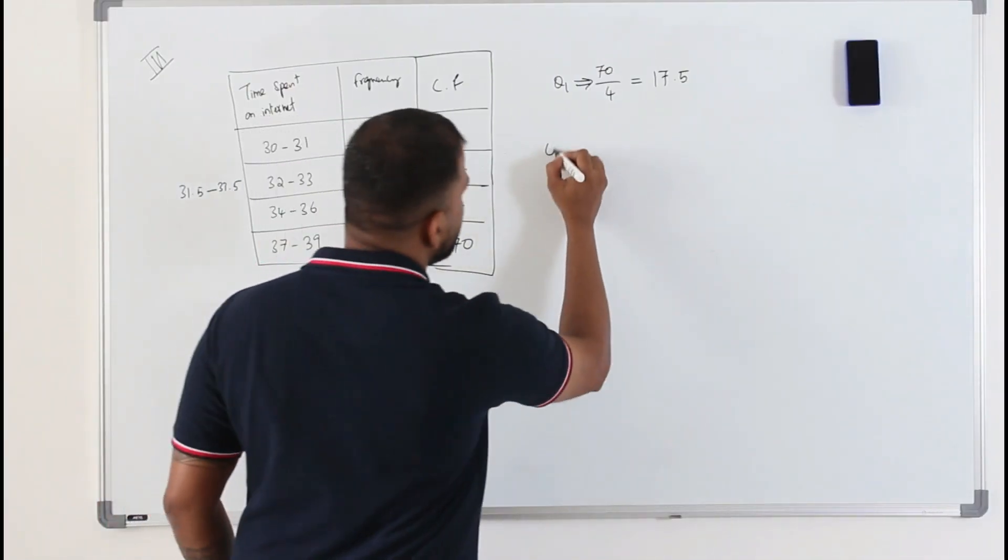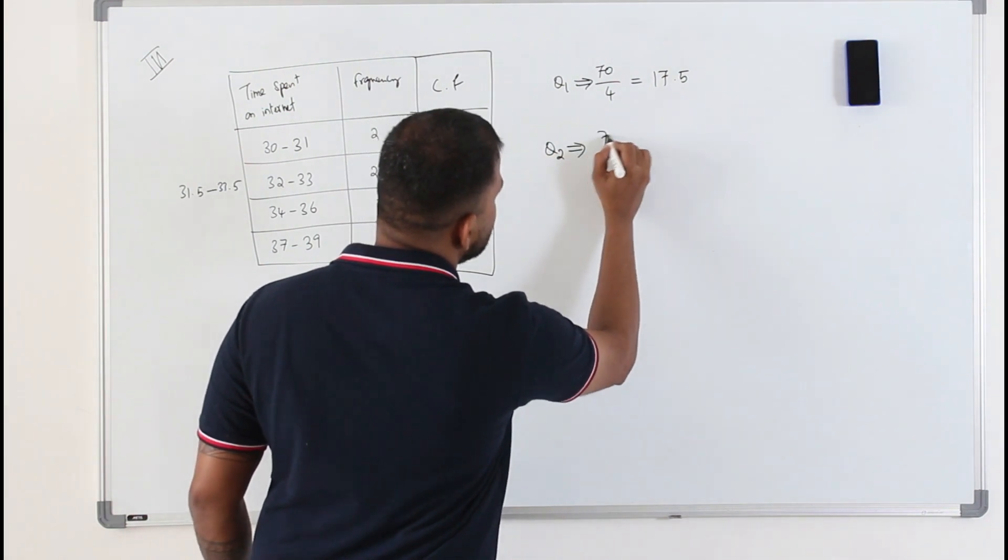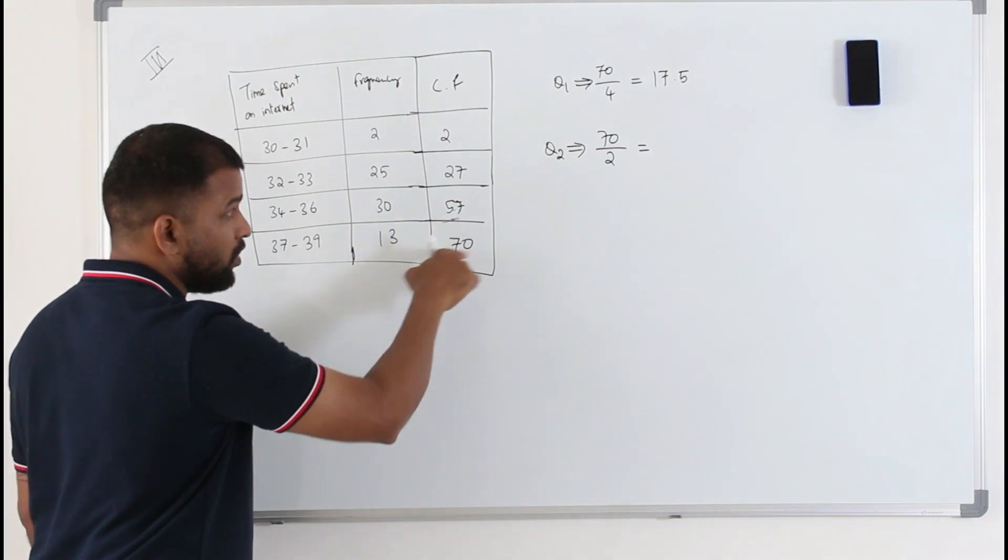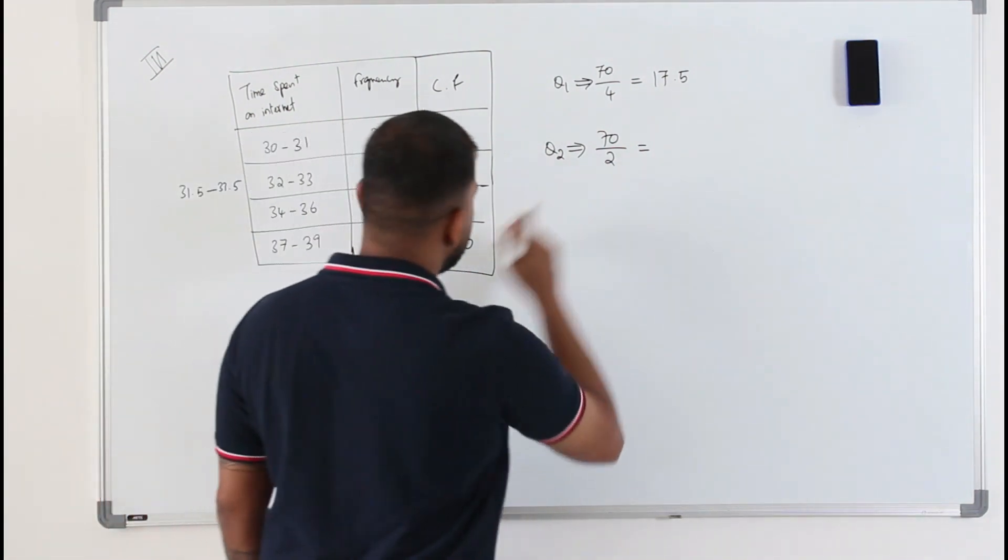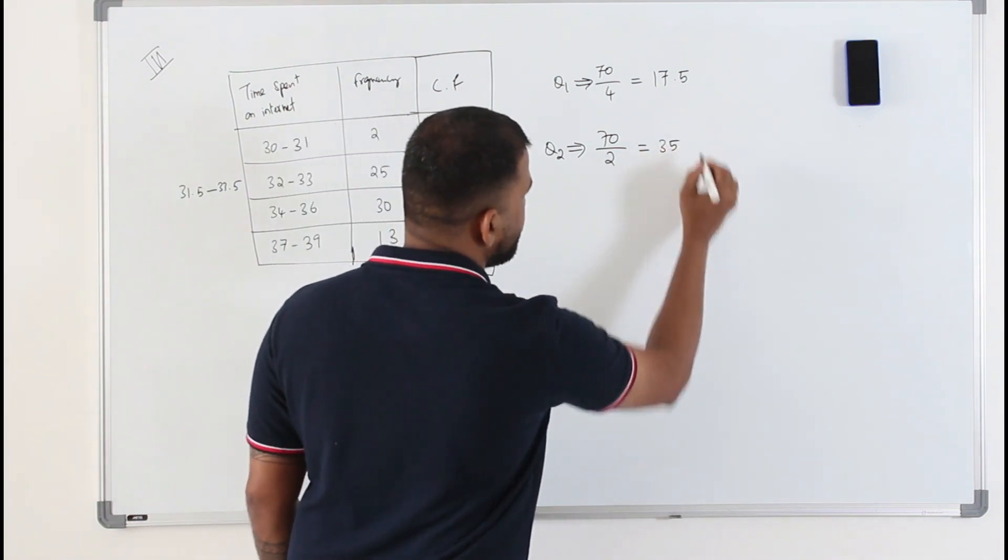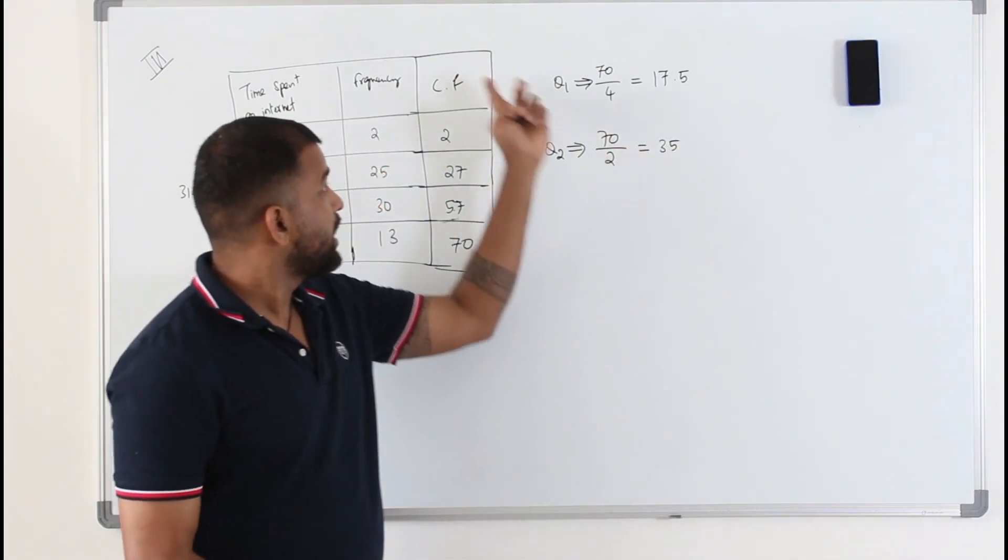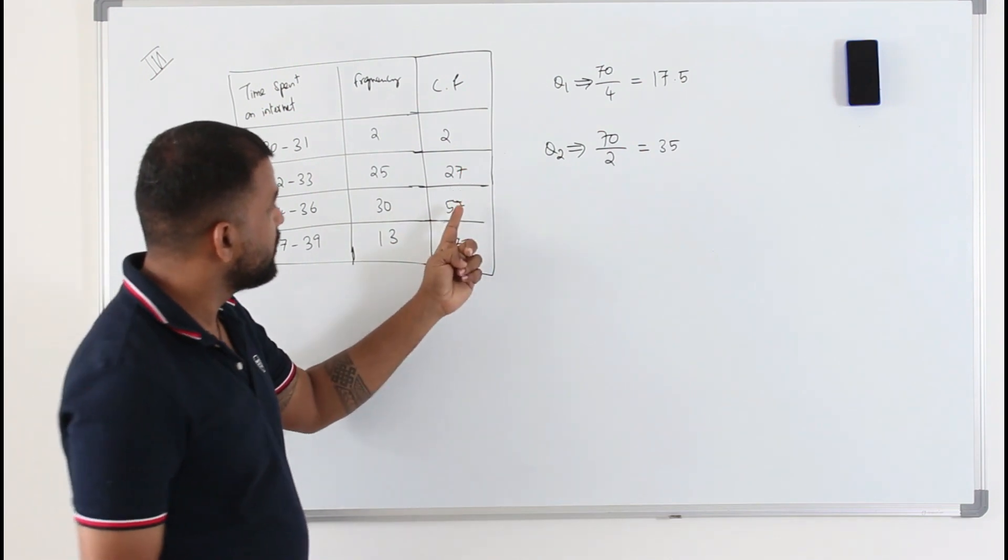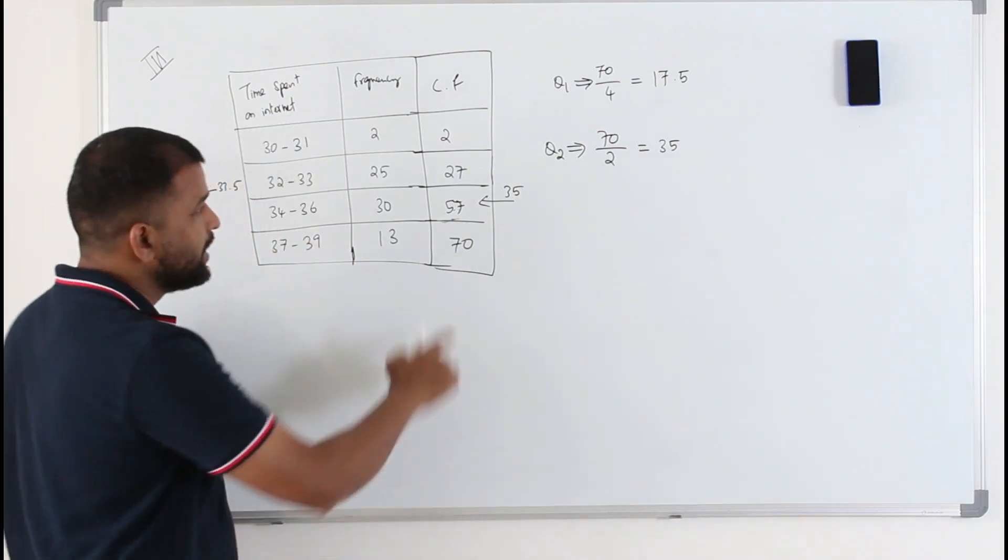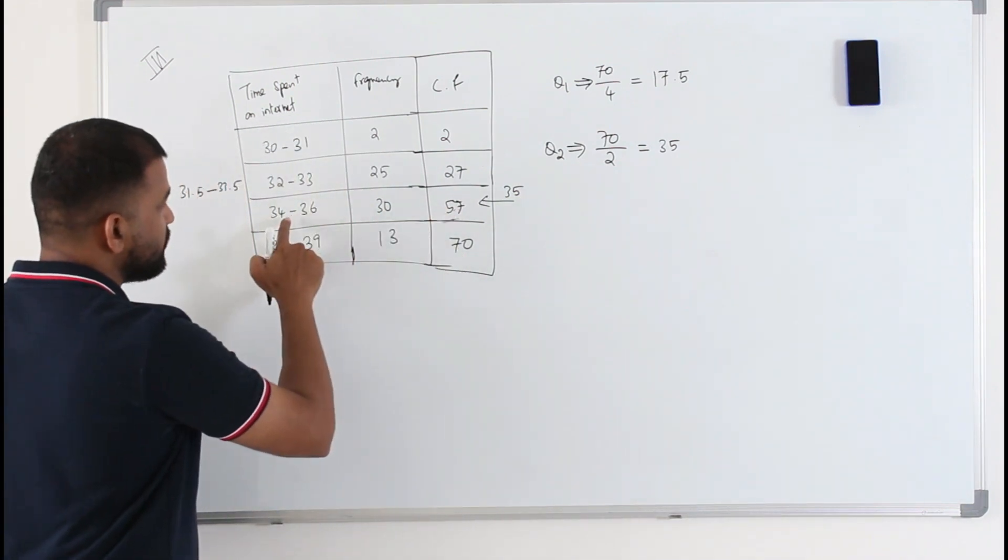So to find the median, divide sigma F by 2. Sigma F - the sum of F - is the last figure from cumulative frequency. You get 35. Check where the 35 lies in cumulative frequency. Anything more than 27 till 57 lies in here. So your 35 also lies in here. Take the corresponding class interval.